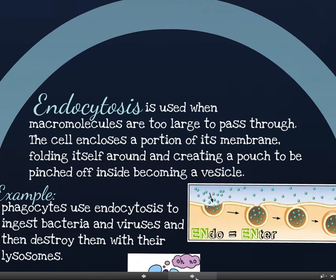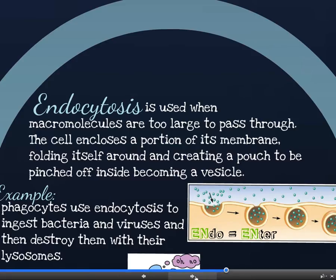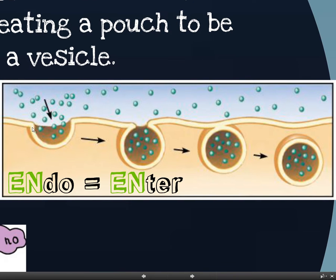Endocytosis is the first type. Endocytosis is used when macromolecules — macro meaning large — are too large to pass through the cell membrane. A portion of the membrane folds itself around, creating a pouch that is pinched off inside, which becomes a vesicle. So this is basically a bit of the membrane here that pinches in and you get this little pouch forming, which buds off completely — a little membrane bubble — and we call that a vesicle, which can then transport these substances. Endo means to enter, so endocytosis means to enter the cell.